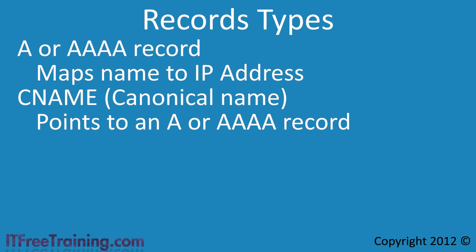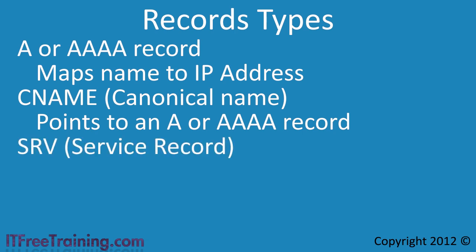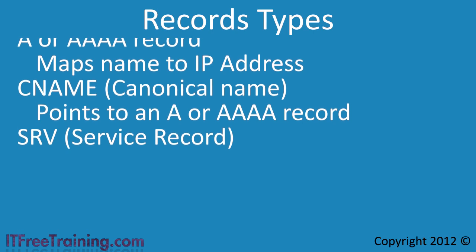Originally, DNS was designed only to resolve host names to IP addresses. Since then it has expanded to allow users to find resources and services on the network. To do this, DNS has service records or SRV records. A service record allows a client to locate services on the network using DNS. Service records are used by Active Directory to allow a client to locate a domain controller, which is why DNS is so important in a Windows environment.